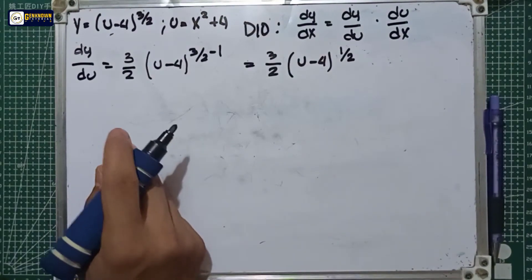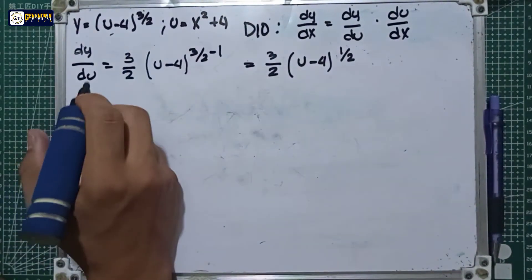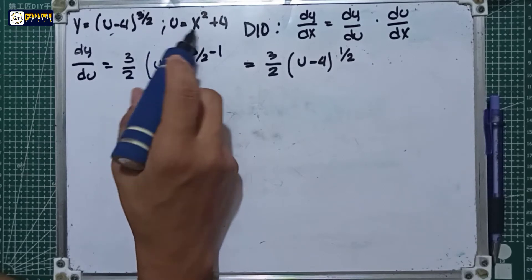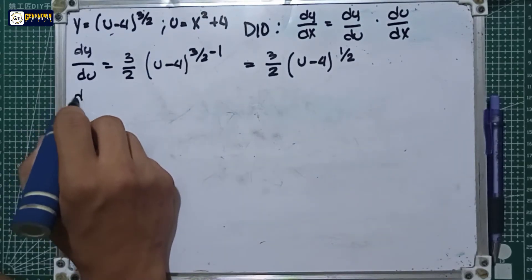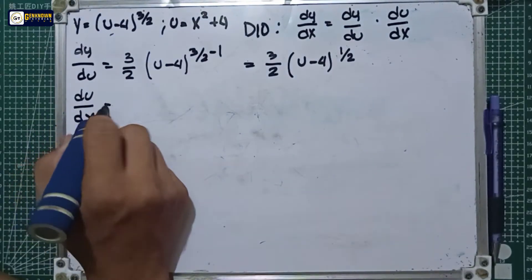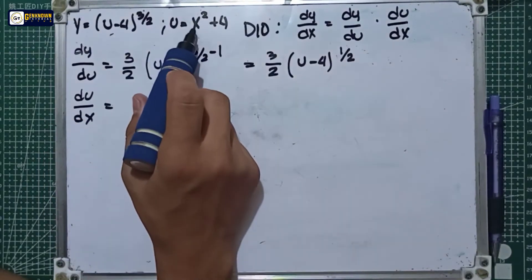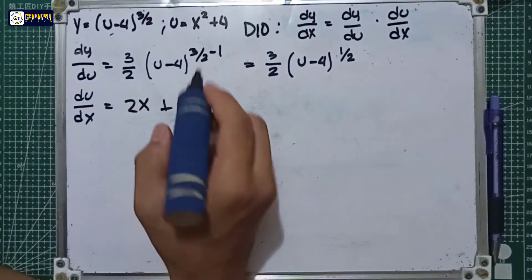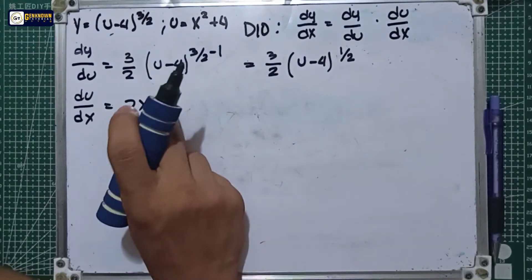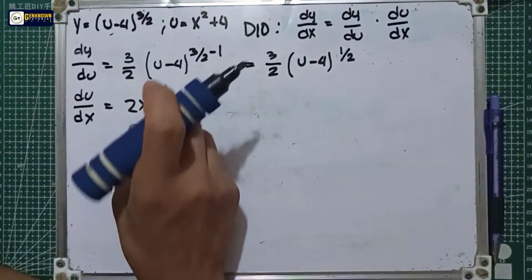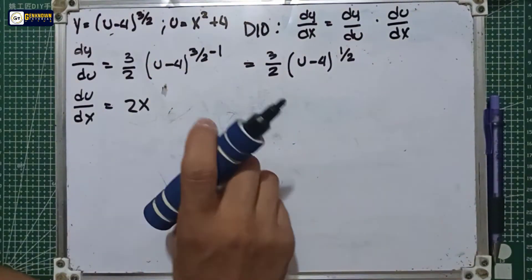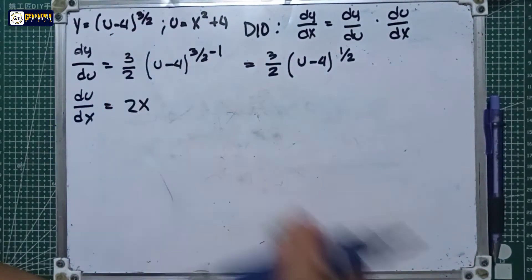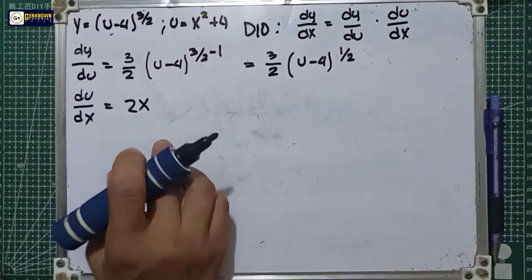The next step is to derive the u equation with respect to x. So du over dx is equal to the derivative of x squared, which equals 2x by the power rule, plus the derivative of the constant 4, which is 0, since the derivative of any constant is zero.